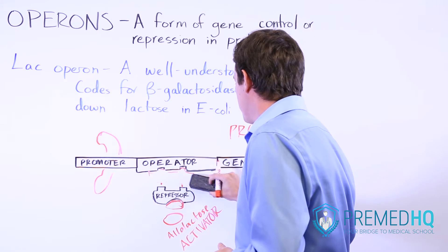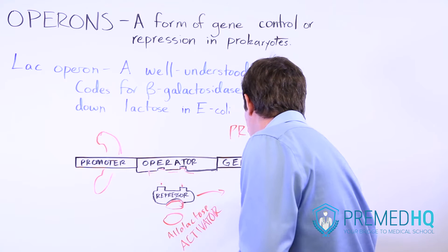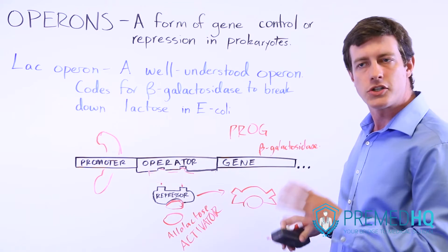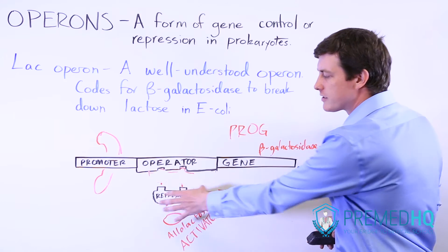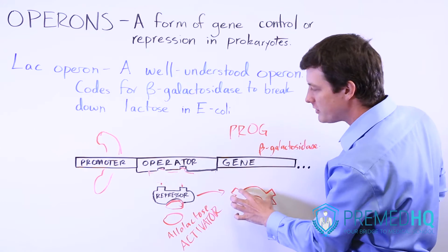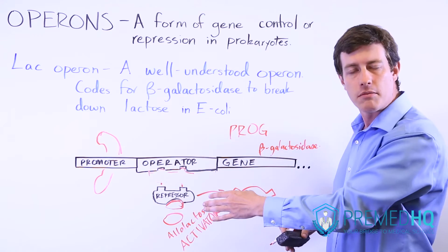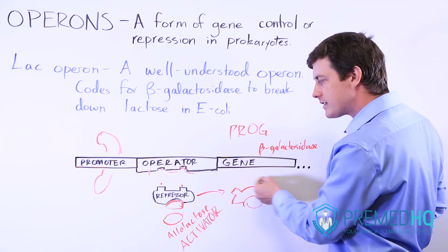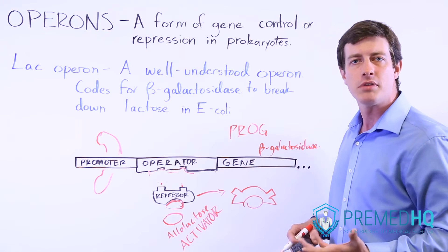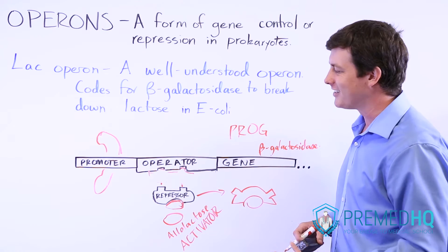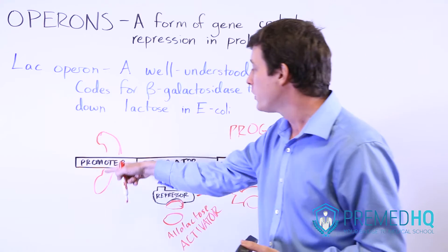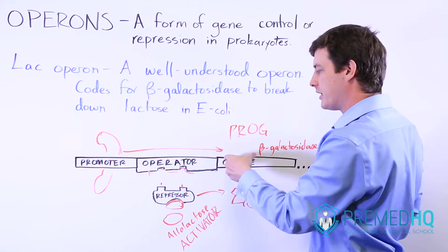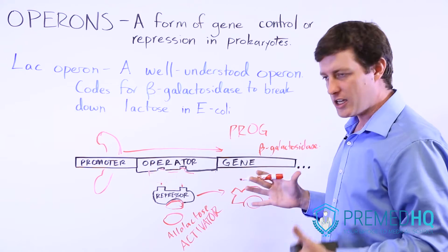The repressor undergoes a conformational change. The repressor that used to fit very nicely into the operator will no longer be the right shape to fit there. So if this allolactose activator is present, it causes the repressor to change shape and no longer be able to repress transcription at that location.